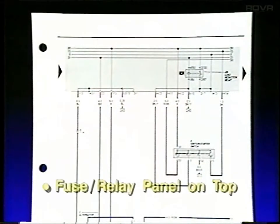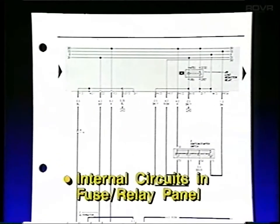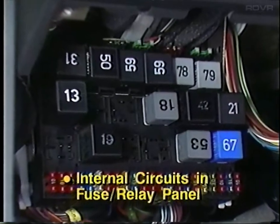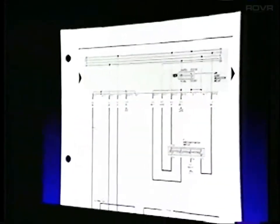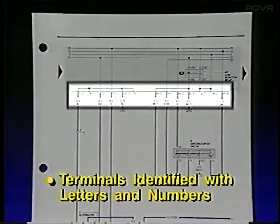Now let's review some of the things we have just covered. The fuse relay panel is the gray shaded area on the top of the diagram. The circuits and relays illustrated inside this shaded area are located inside or on the fuse relay panel. The terminal connections on the fuse relay panel and other electrical components are identified with letters and numbers.